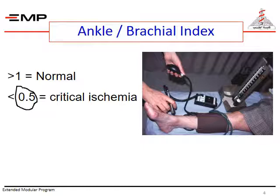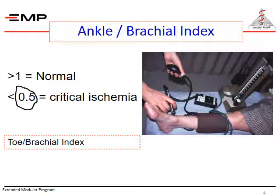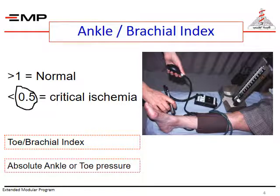In diabetic patients, the toe brachial index is a more accurate indicator of ischemia than the ankle brachial index. The explanation of this finding will be discussed in the face-to-face session. The absolute ankle or toe pressure is now used as an indicator for critical ischemia. In the clinical session, we will demonstrate how to use the pocket Doppler, and each student will learn how to use it to detect the arterial flow.